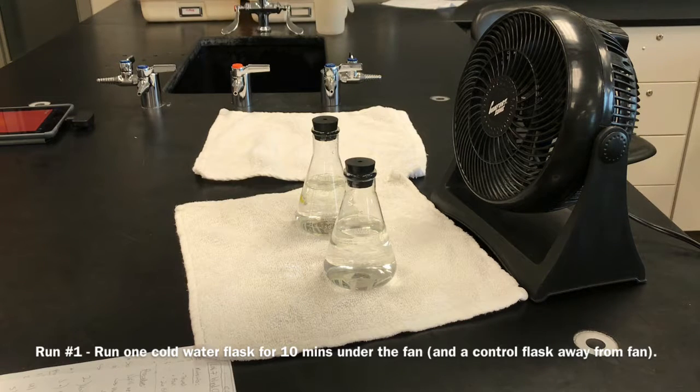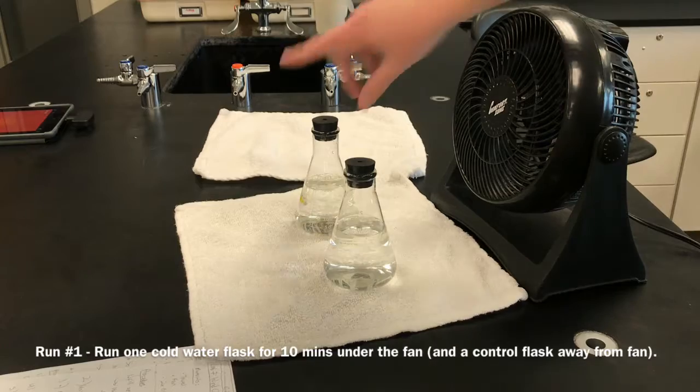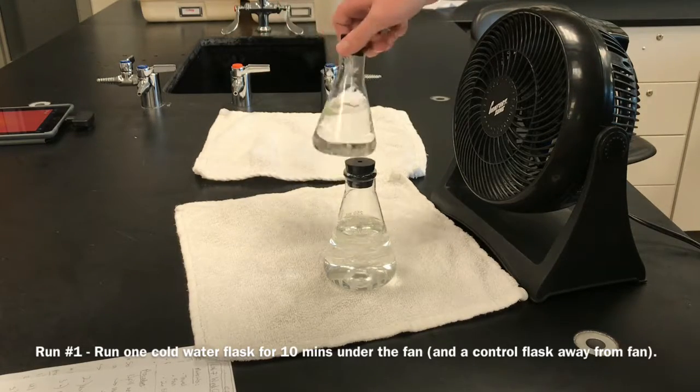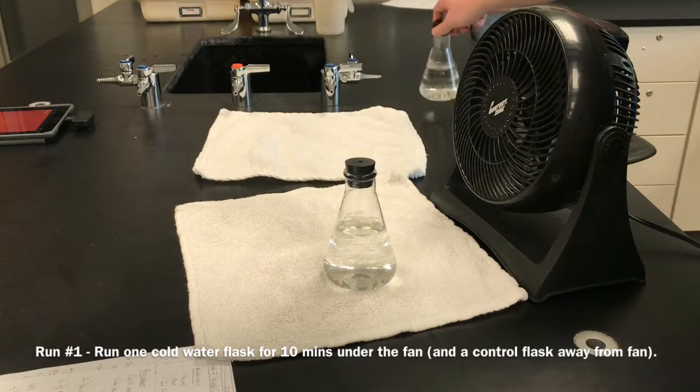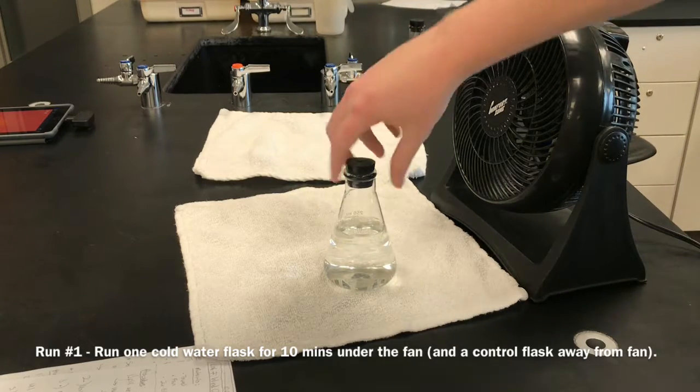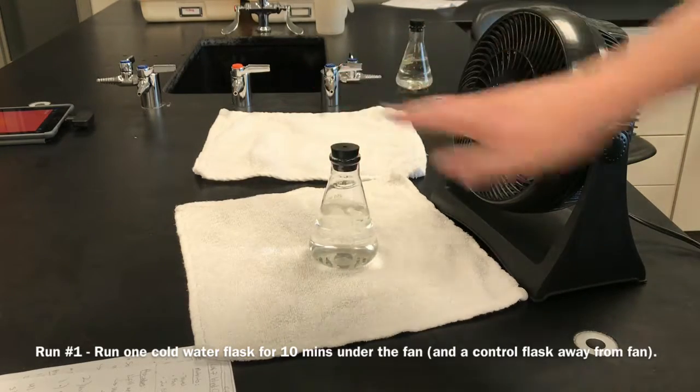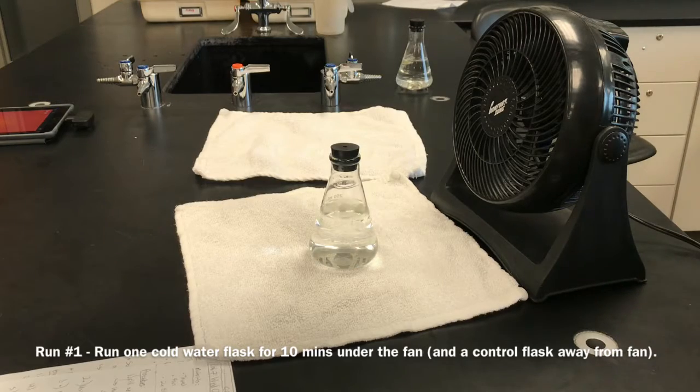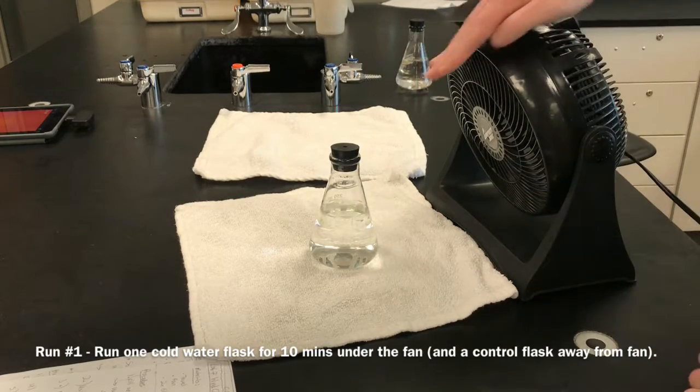Now what I'm gonna do is totally remove one of these flasks. So pick one as long as you remember which one you did. I'm gonna move it off to the side, way off to the side of the influence of the fan. I'm gonna center my flask that I'm actually gonna run under the fan, tilt the fan down so that it's facing the flask.